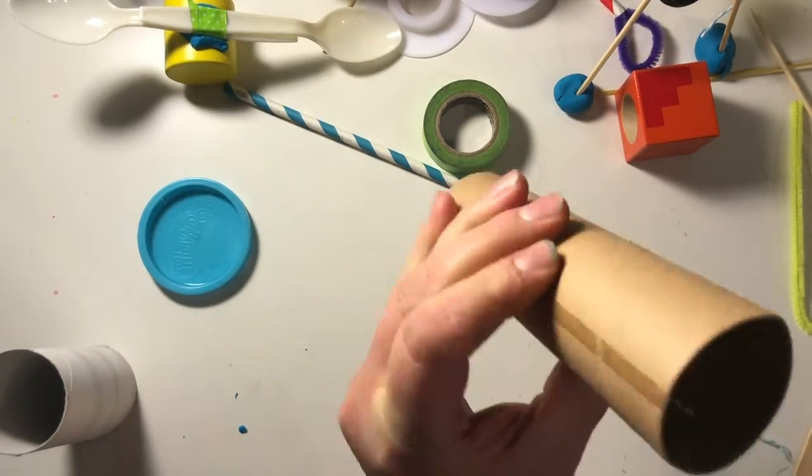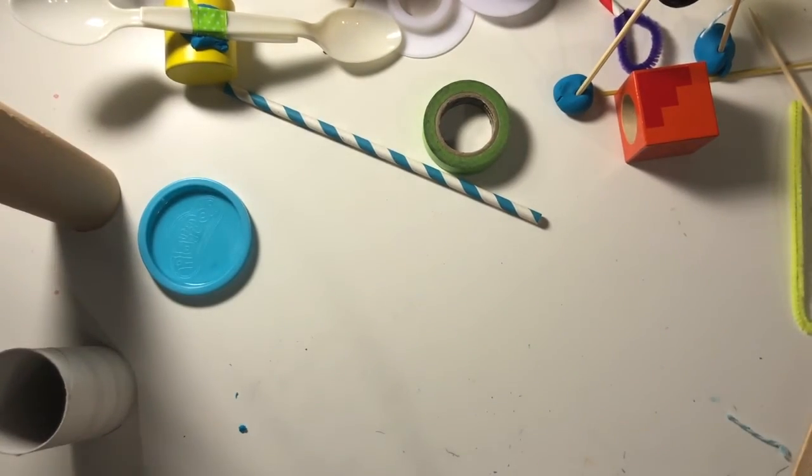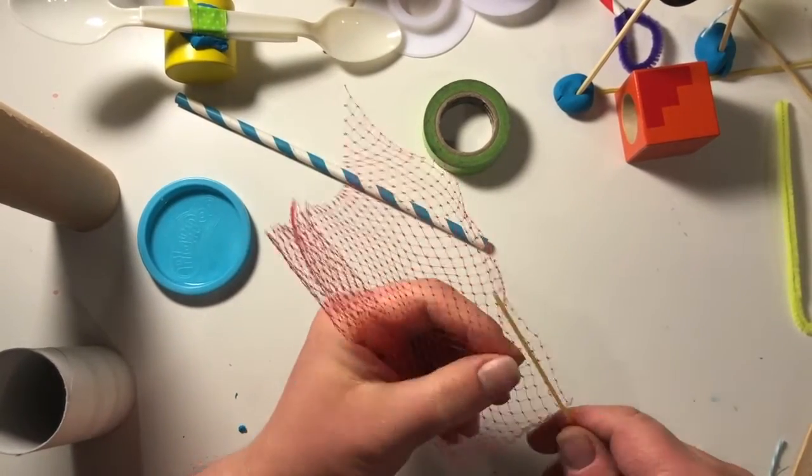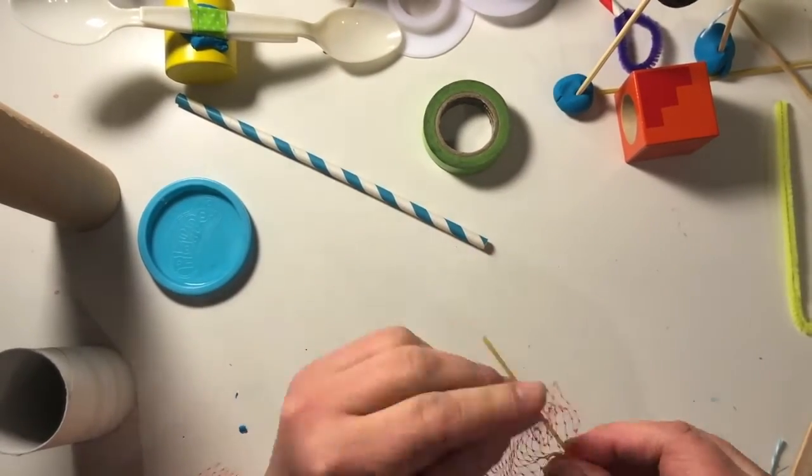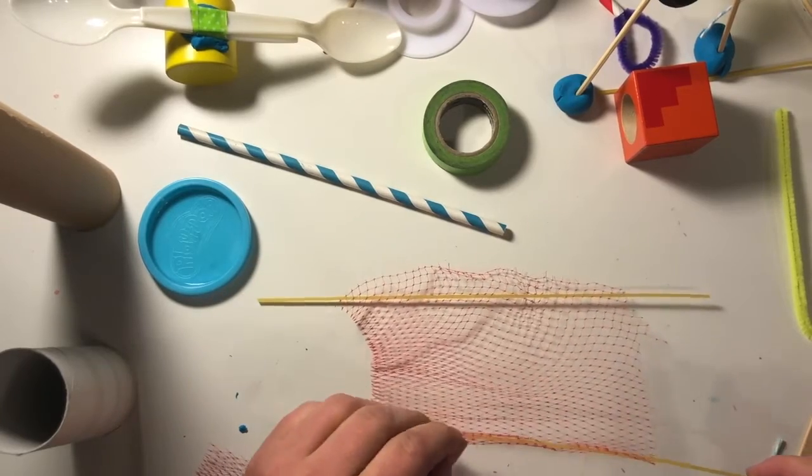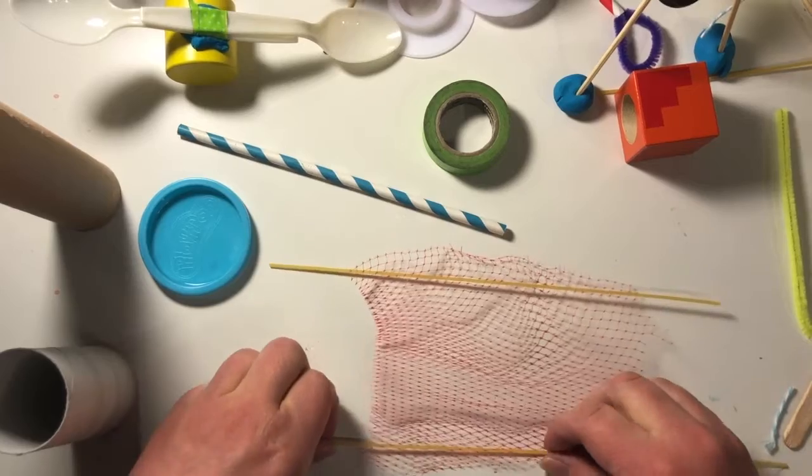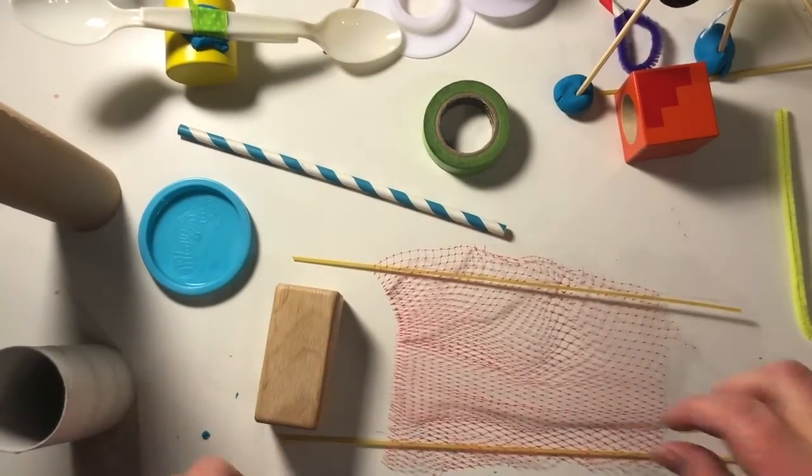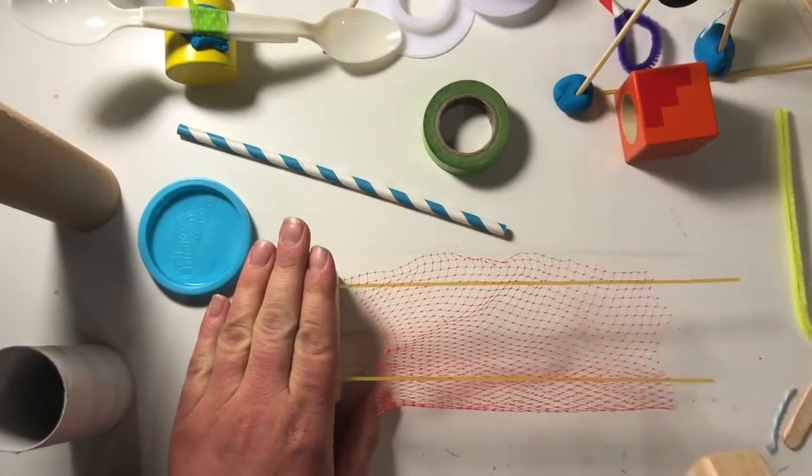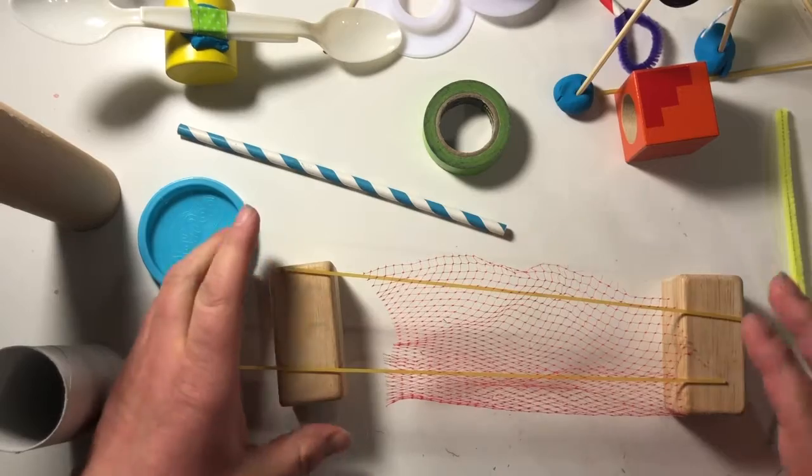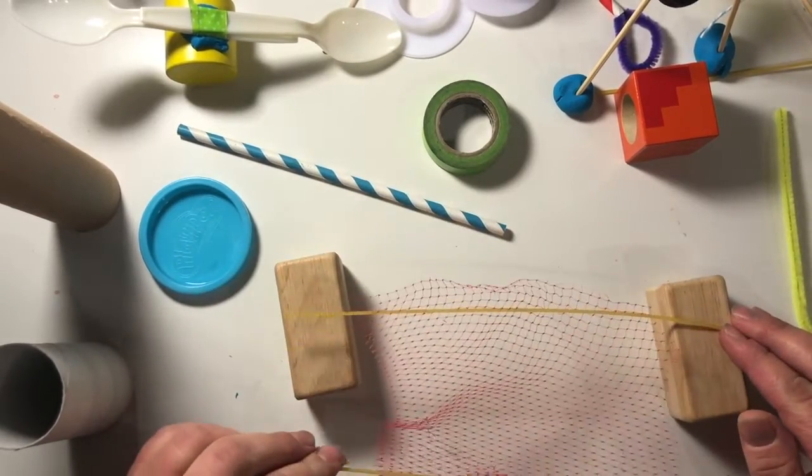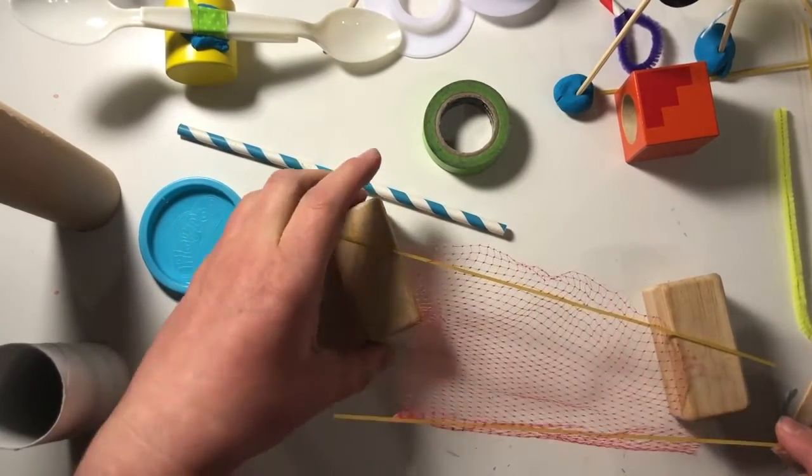This could just be a tunnel that people crawl through on the playground. Okay, the mesh. Let's take the spaghetti and kind of weave it in there. So, let's get some support. There we go. And then, you know, try different things. And again, this is all about experimentation.